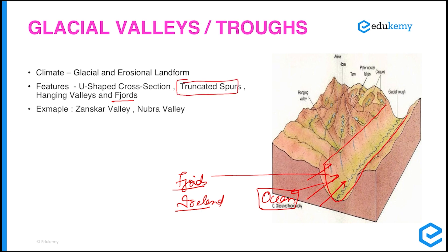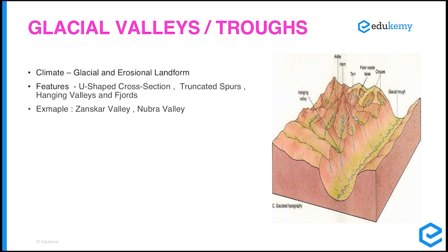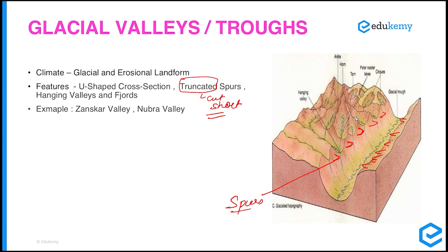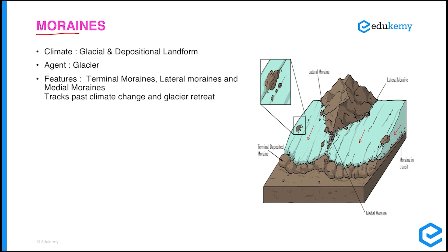Another important landform is truncated spurs. Some land projects outward from the valley sides — these projections are called spurs. 'Truncated' means to cut short. When glaciers move through the valley they erode these spurs, cutting them short. The spurs that have been eroded or cut short are called truncated spurs. Examples include Zanskar Valley and Nubra Valley in India.